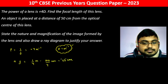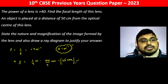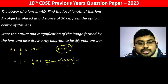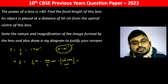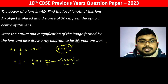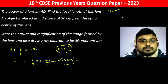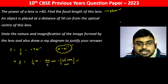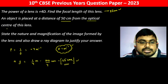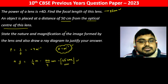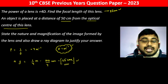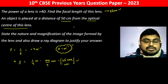Okay, so the focal length is 25 centimeter. An object is placed at a distance of 50 centimeter from the optical center of this lens — 50 centimeter — so it is actually at 2C.